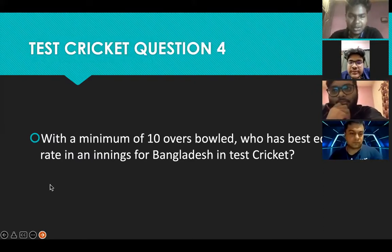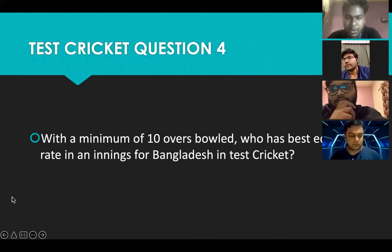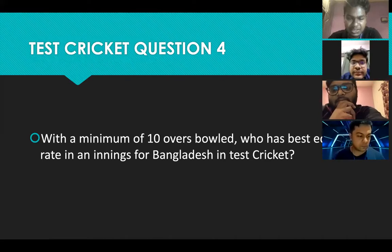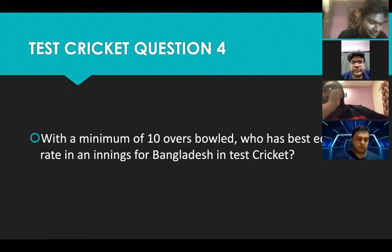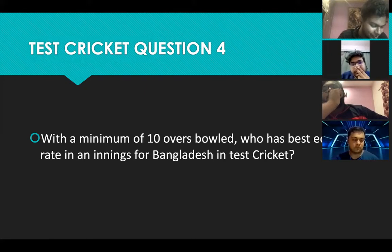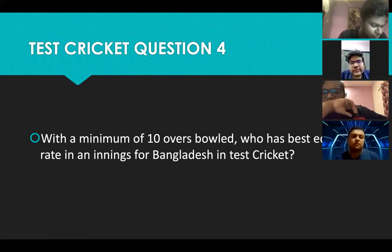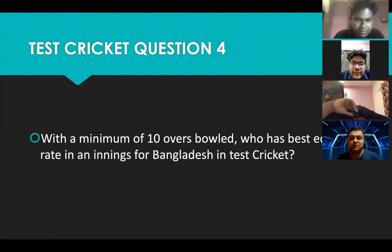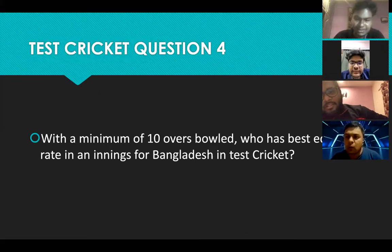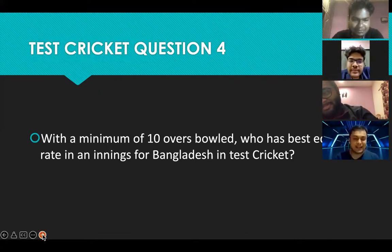Let's go to Sanjay. Your first question: with a minimum of 10 overs bowled, who has the best economy rate in an innings for Bangladesh in Test cricket? Just to give a clue — it can be a part-time bowler at times. Mominul Haq — correct! Yes, 10 points. Well done.